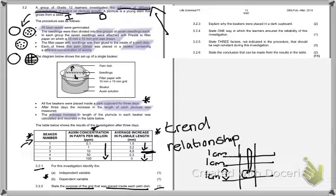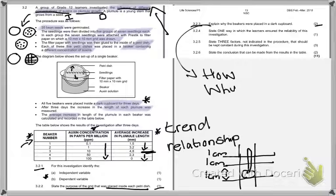Question 3.2.3 says explain why the beakers were placed in a dark cupboard. This is for two marks. Any explain question is always asking how and why. We are going to say they were put in the cupboard, why were they put in the cupboard? And then how is this going to influence our experiment?